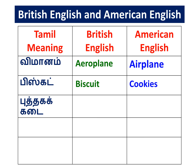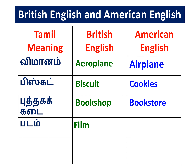American English for biscuit is Cookies. Third one is Bookshop — it is in British English. American English is Bookstore. Next word is Film — it is in British English. American English is Movie.